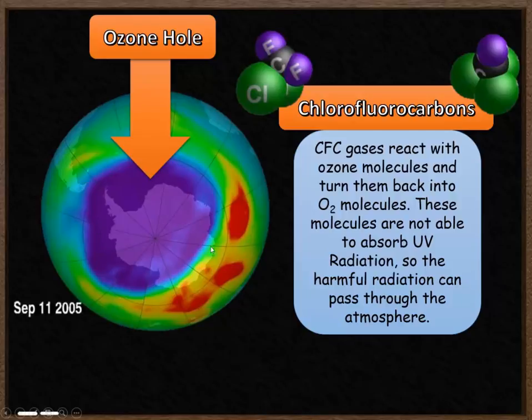So around this area here, the harmful UV radiation is able to reach the surface of the earth. Fortunately for us, this isn't where we live. This is around the South Pole, which is largely uninhabited. However, we don't want these gases to be emitted into the atmosphere and cause more or further damage to the ozone layer.